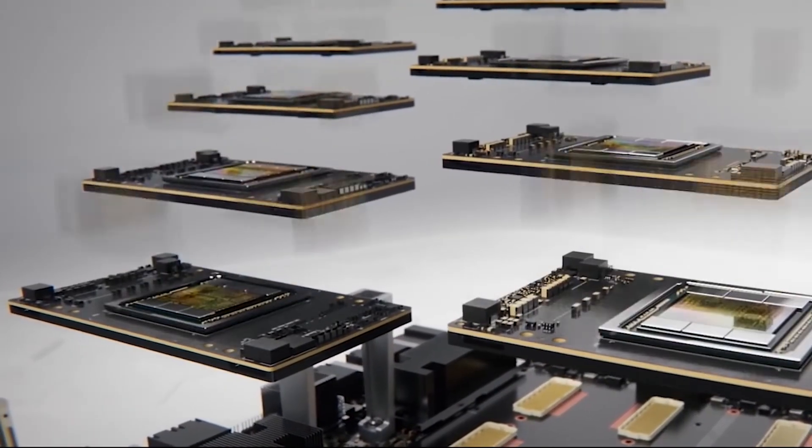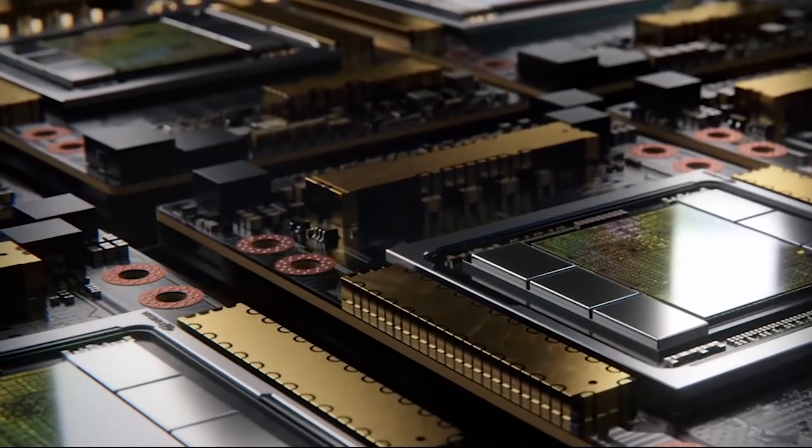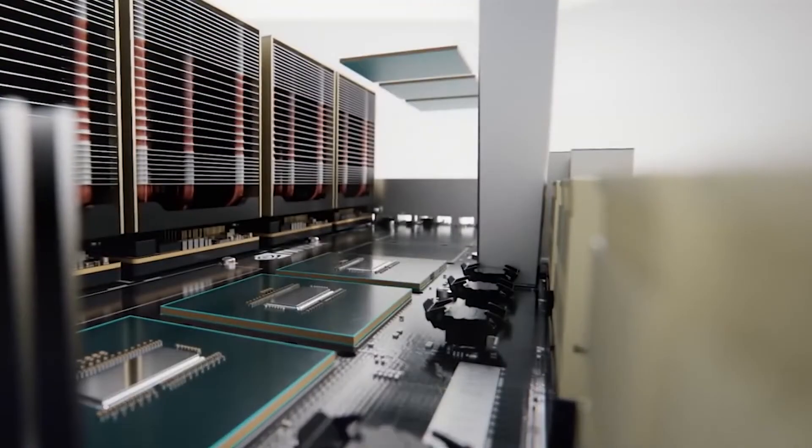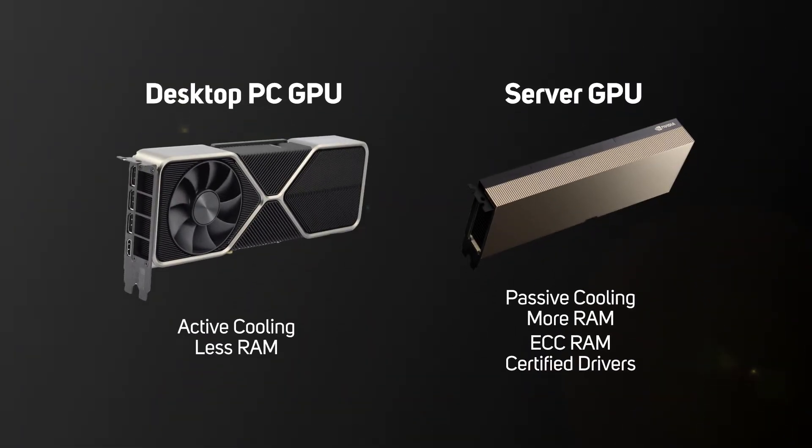Just like many desktop PCs, all servers include a basic integrated GPU to drive the operating system on the rare occasion a monitor is connected. In addition, some servers have the capability to support discrete GPUs for specialist workloads such as rendering, AI and high-performance computing. Typically these are PCIe cards, although there's a special type of GPU packaging known as SXM, which embeds multiple GPUs and their memory onto a high-density PCB that looks more like a motherboard than a graphics card. Like server CPUs, server GPUs are very different from their desktop counterparts, with specific architecture that enhances performance, support for ECC memory and virtualisation capabilities.